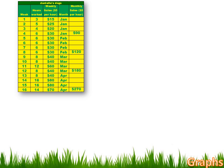Danielle decided early on that she'd keep good records about how much money she was making. She created a table with weeks 1 through 16 in the left column, then the number of hours she worked each week, and then the total revenue. In week 1, she worked 3 hours and earned $15. In week 6, she worked 6 hours and had $30 revenue. She also totaled by month: January was $90, February was $120, and so forth.